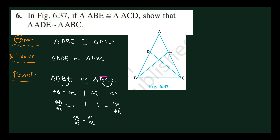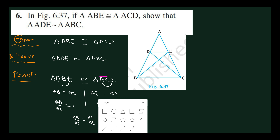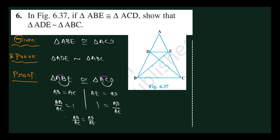Now take triangle ADE and triangle ABC. Observe the green and orange color triangles. Here AB by AC — just interchange to get AD by AE.